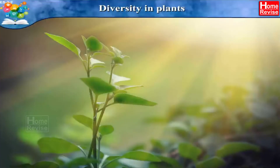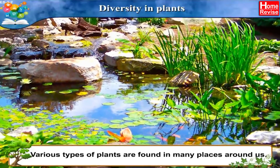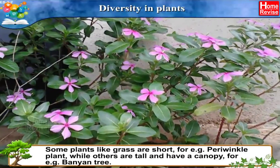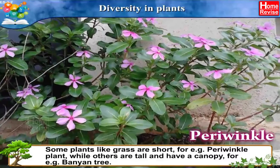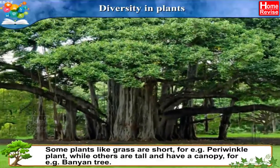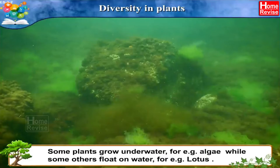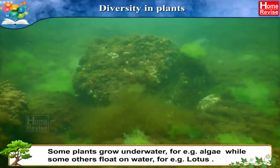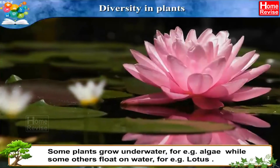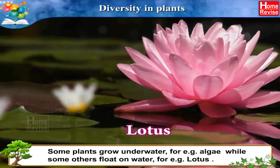Diversity in plants — various types of plants are found in many places around us. Some plants like grass are short, for example the periwinkle plant, while others are tall and have a canopy, for example the banyan tree. Some plants grow underwater, for example algae, while some others float on water, for example the lotus.